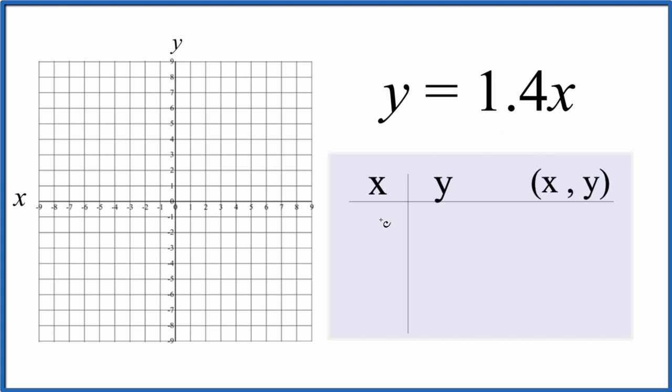So I always like to start out with x equals 0. It's 1.4 times 0. That's just 0 for y. Then you can choose any points you want. Let's just choose 1 here. So 1 for x, 1.4 times 1, that is 1.4.